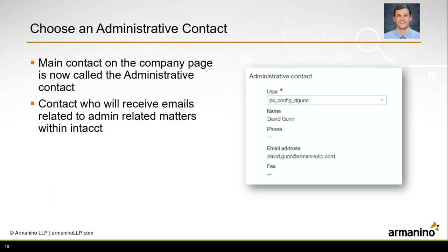Next is the ability to choose an administrative contact. If you've been on the company configuration page, you may have noticed that the main contact is now going to be called the administrative contact. This person is the main point of contact to receive any emails related to admin functions within your instance of Intact. You can set this up by going to Company, Setup tab, then Company. The dropdown shown in the screenshot only includes users who are listed as full admins in the system.